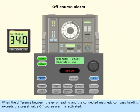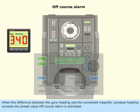When the difference between the gyro heading and the connected magnetic compass heading exceeds the preset value, the off course alarm is activated.